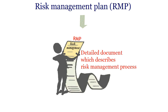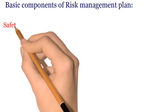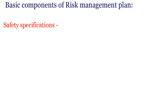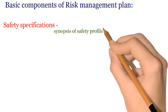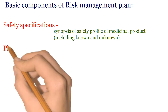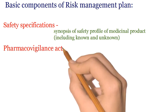Risk management plan is a detailed document which describes the risk management process. The basic components of risk management plan are: first, safety specifications, which includes a synopsis of the safety profile of the medicinal product. These safety specifications form the base for pharmacovigilance activities and risk minimization activities.